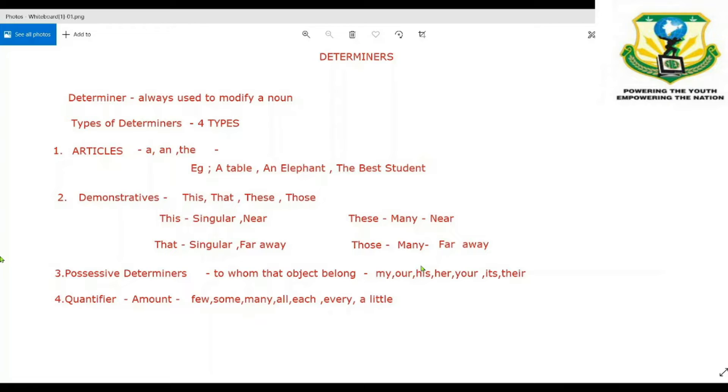Number one is articles. We have already seen elaborately about articles: a, an, and the. Examples are a table, an elephant, and the best student.